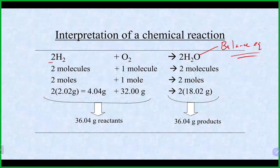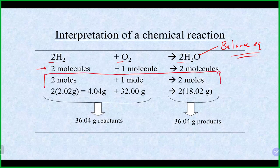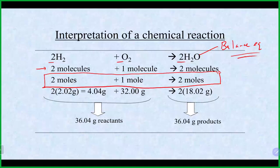The two, the one, and the two — we could say two molecules of H₂ react with one molecule of O₂ to produce two molecules of H₂O. The real relationship that we use in stoichiometry is the mole-to-mole relationship. It is just the coefficients. So we could say that two moles of H₂ react with one mole of O₂ to give us two moles of H₂O.